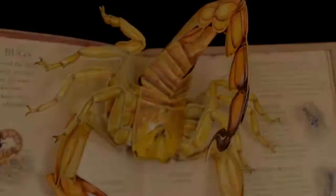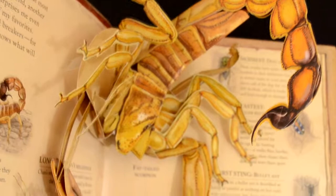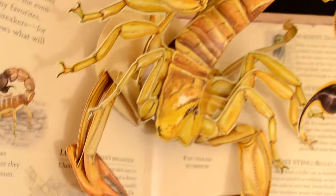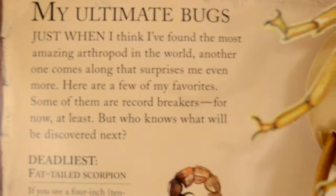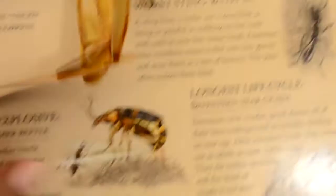Now in the middle of the ninth and tenth page, here is our pop-up — it is a scorpion. Now on the ninth page it talks about the ultimate bugs: the deadliest, strongest, heaviest, longest, most explosive, the noisiest, fastest, worst sting, and it's got the longest life cycle.